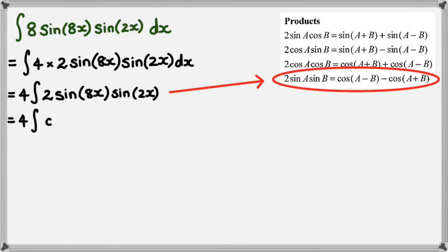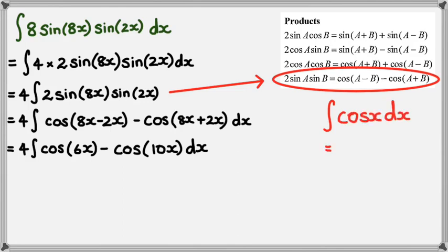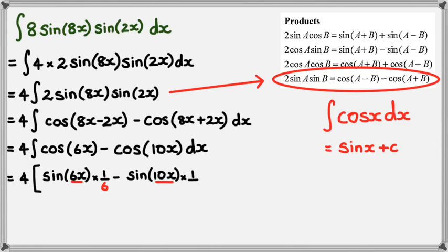4 times the integral of cos(8x - 2x) minus cos(8x + 2x). Simplifying: 4 times the integral of cos(6x) - cos(10x)dx. Now, the integral of cos(x)dx is sin(x) + C, so we have 4 times [sin(6x) times 1/6 minus sin(10x) times 1/10], where 6 and 10 are the derivatives of 6x and 10x respectively.